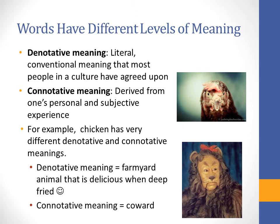For example, we have the word 'chicken.' Looking at the denotative meaning, it means a farmyard animal that is delicious when you deep fry it. When you look at the connotative meaning, in the United States especially, 'chicken' means you're a coward. On the playground, when somebody says you're a chicken, that means you are too afraid or too cowardly to try something — you won't take the dare.